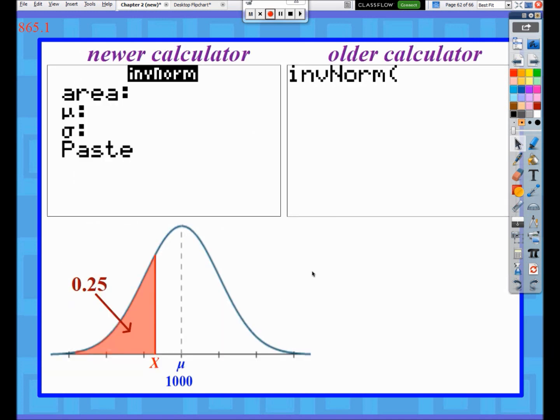Here's how we get to use inverse norm. When they say area, I'm going to use a different term here. Really area represents the area to the left of that unknown value X, but instead of calling it area, we're going to refer to it as the percentile.